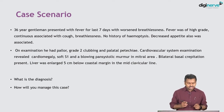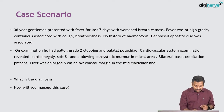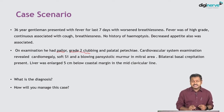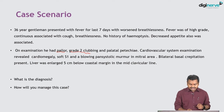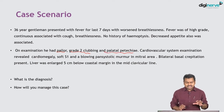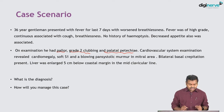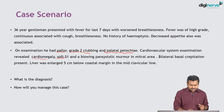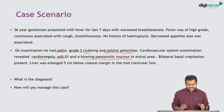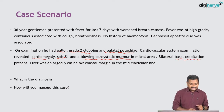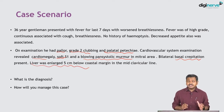On examination there is pallor, grade 2 clubbing, and palatal petechiae. Cardiovascular system examination reveals cardiomegaly, a soft first heart sound, and a blowing pansystolic murmur in the mitral area. The respiratory system shows bilateral basal crepitations, and the liver is mildly enlarged — approximately five centimeters.